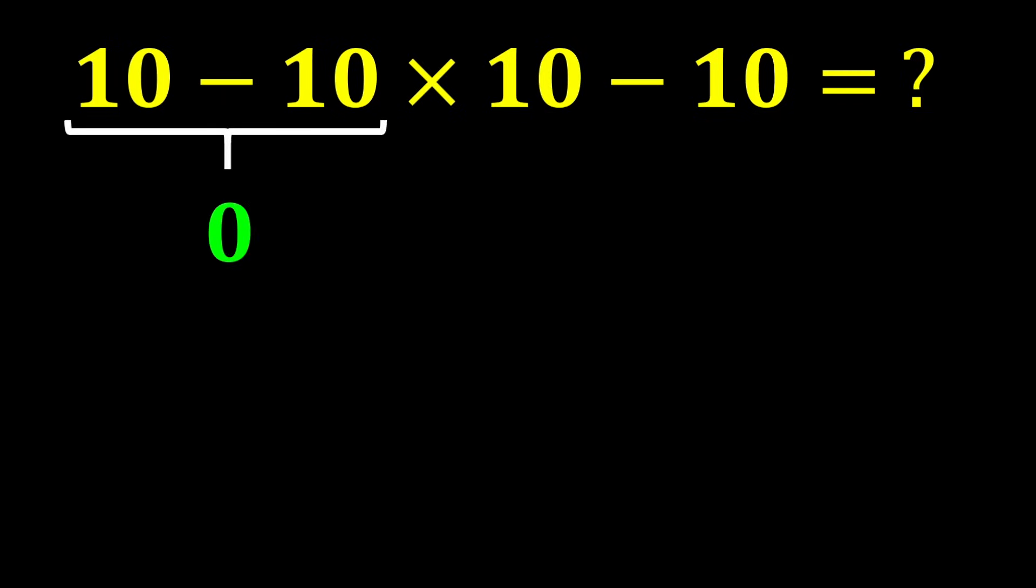10 minus 10 gives us 0, and again 10 minus 10 gives us 0. In the end, 0 times 0 gives us 0.